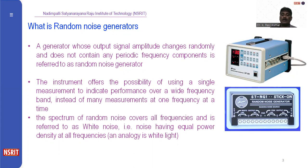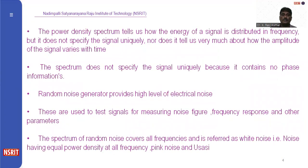The spectrum of random noise covers all frequencies and is referred to as white noise — that is, noise having equal power density at all frequencies. The power density spectrum tells us how the energy of the signal is distributed, but it does not specify the signal amplitude.